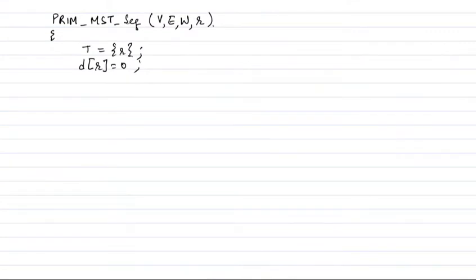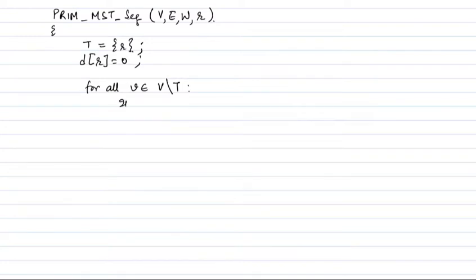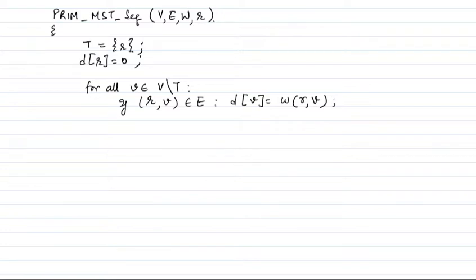I have to initialize the d array. I'm going to look at all the vertices which are not in the current set — other than r — and check if the edge r-v belongs to the edge set. If it does, I set its distance to the weight of that edge. If that edge does not exist, I initialize d[v] to infinity.